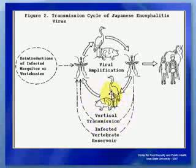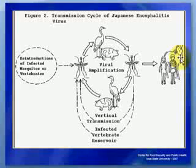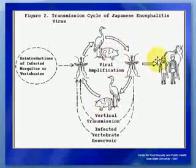Cattle and buffaloes may also be infected with Japanese encephalitis virus and are called mosquito attractants. Horses are the only domestic animals known to show signs of encephalitis due to Japanese encephalitis virus infection. Some species of birds such as pond herons, cattle egrets, and perhaps poultry and ducks also appear to be involved in the natural history of the virus.